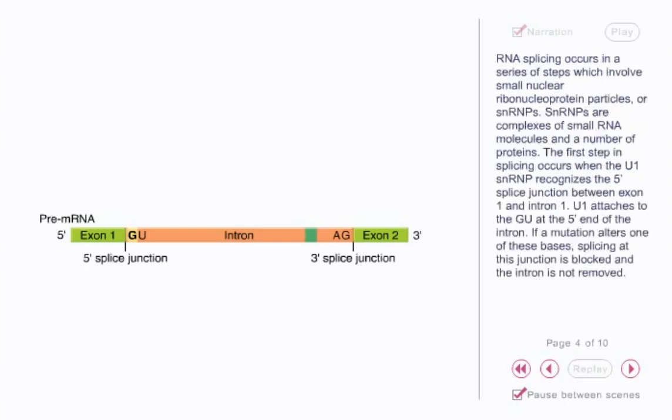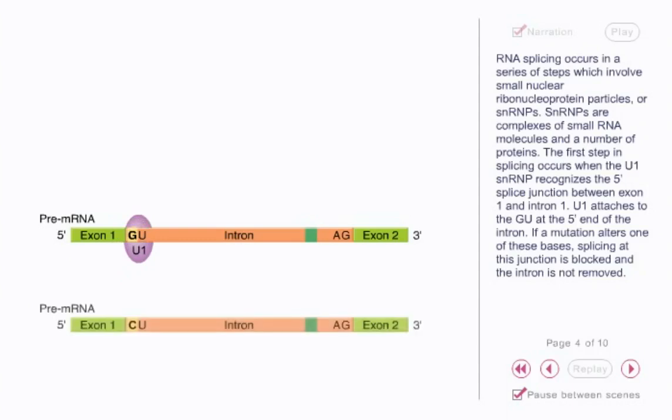RNA splicing occurs in a series of steps which involve small nuclear ribonucleoprotein particles, or SNRPs. SNRPs are complexes of small RNA molecules and a number of proteins. The first step in splicing occurs when the U1 SNRP recognizes the 5' splice junction between exon 1 and intron 1. U1 attaches to the GU at the 5' end of the intron. If a mutation alters one of these bases, splicing at this junction is blocked and the intron is not removed.